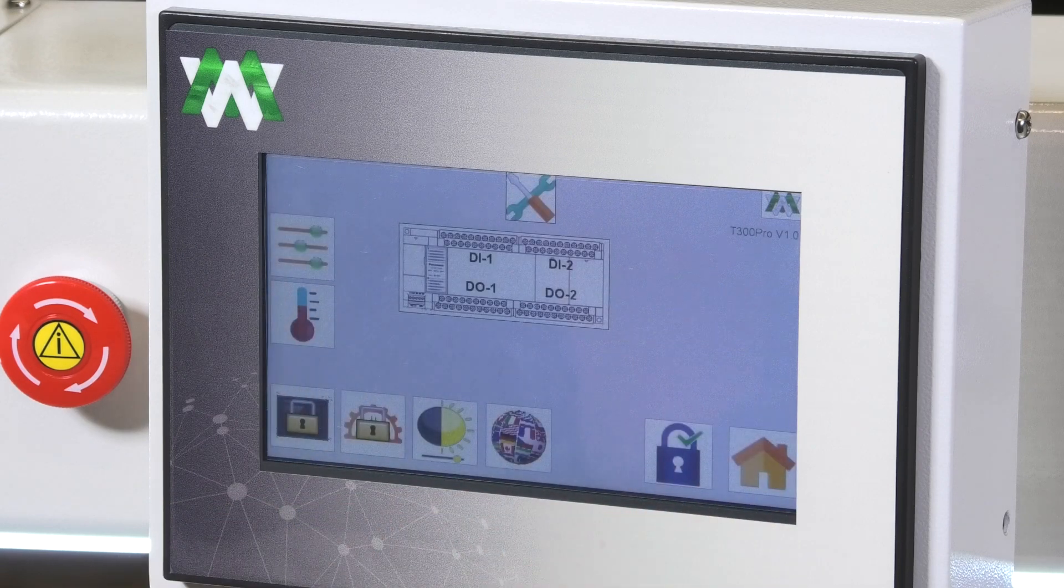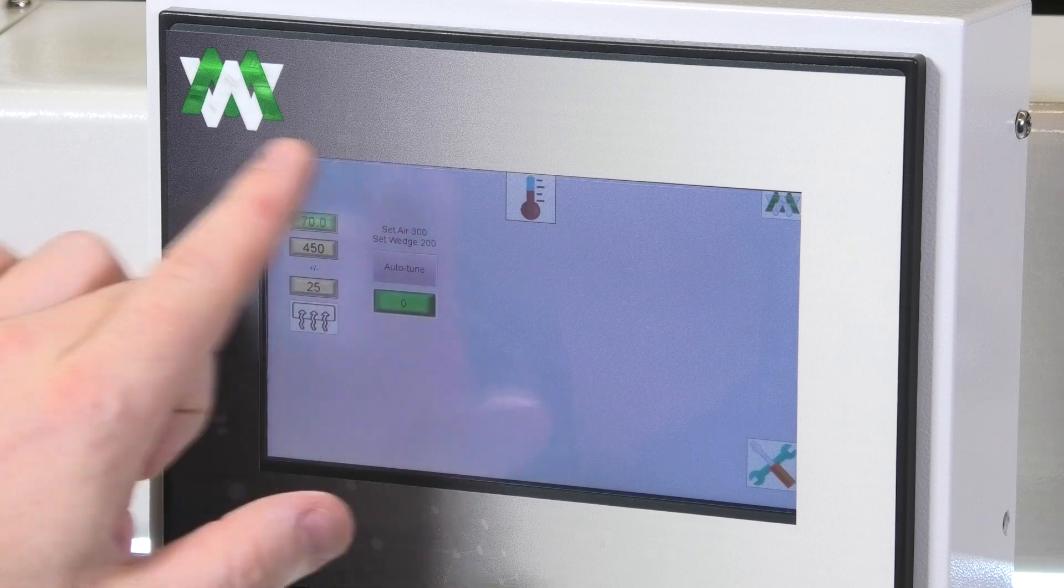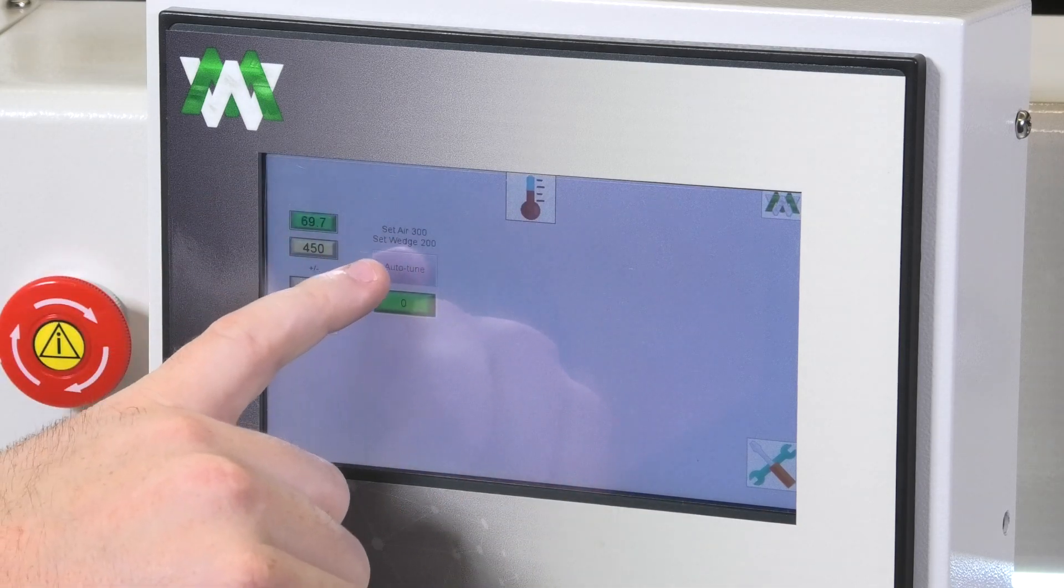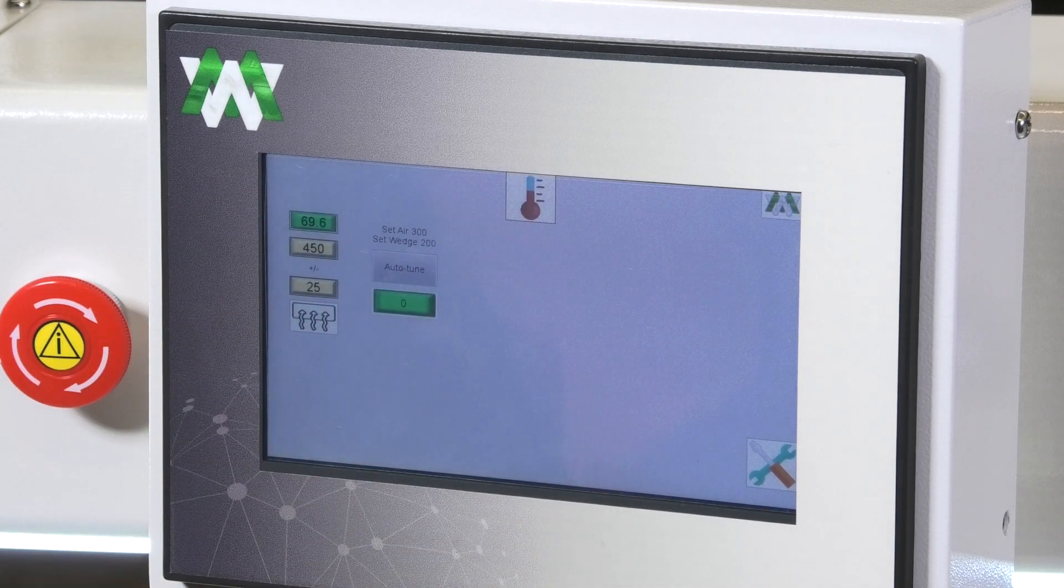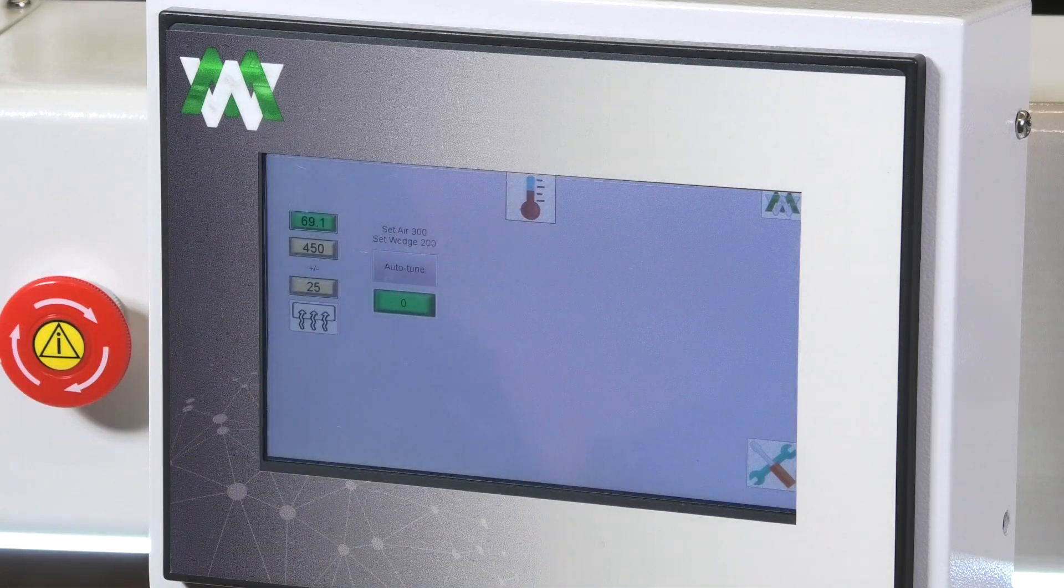Anytime you switch between heat systems, you must go to this menu and you'll want to auto-tune it. We have a note up here that says when you're doing the hot air, you will need to set it to 300, then click auto-tune. Hot wedge will be 200.